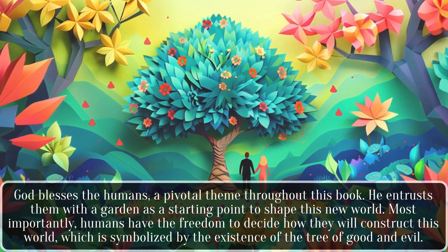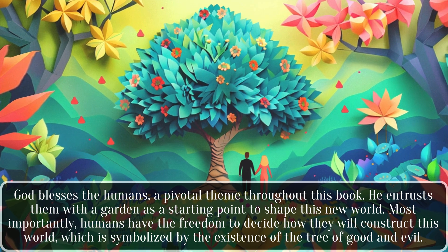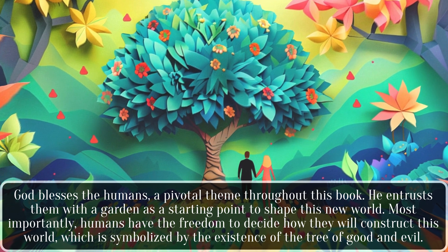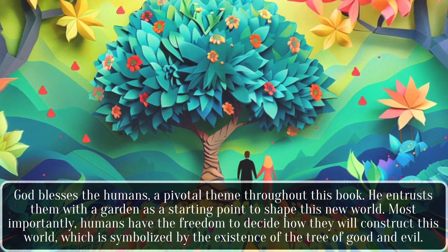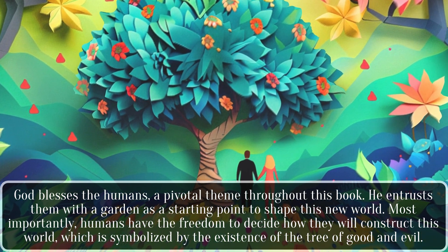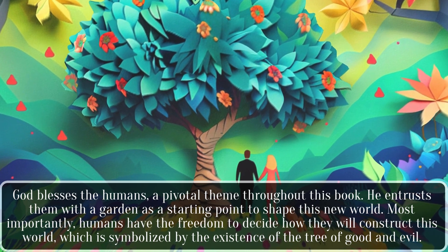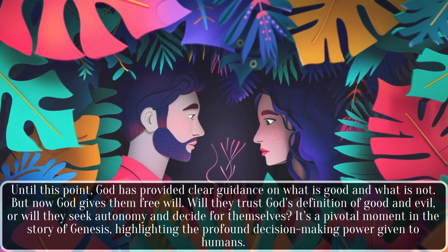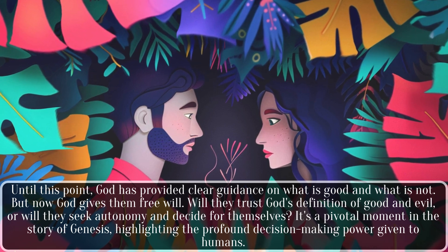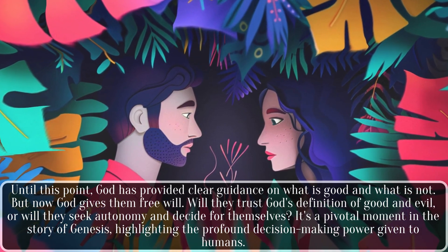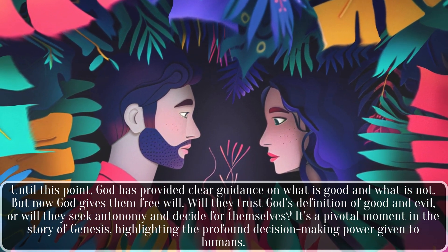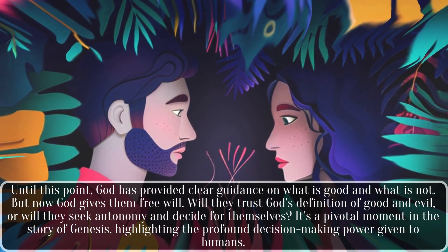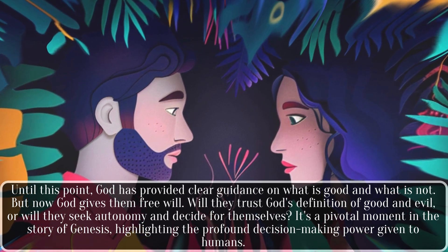God blesses the humans — a pivotal theme throughout this book. He entrusts them with a garden as a starting point to shape this new world. Most importantly, humans have the freedom to decide how they will construct this world, which is symbolized by the existence of the tree of good and evil. Until this point, God has provided clear guidance on what is good and what is not. But now God gives them free will. Will they trust God's definition of good and evil, or will they seek autonomy and decide for themselves? It's a pivotal moment in the story of Genesis, highlighting the profound decision-making power given to humans.